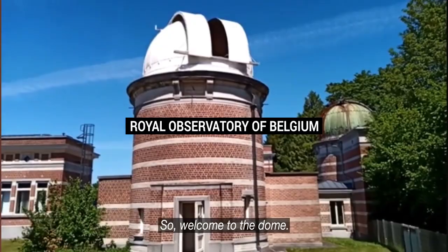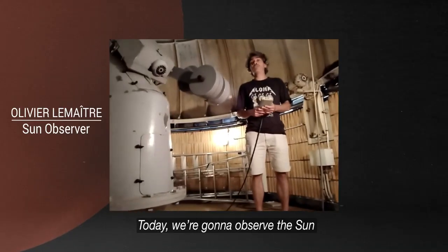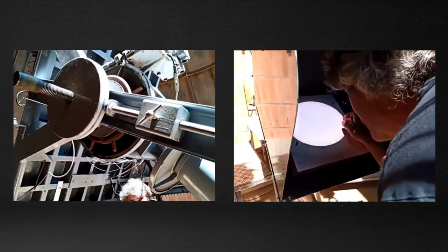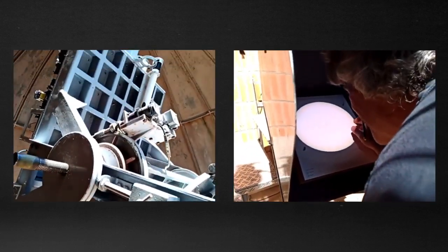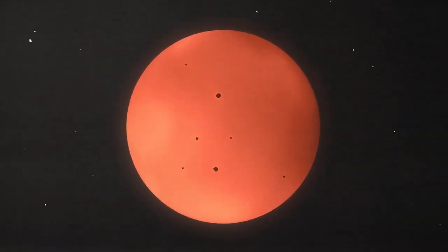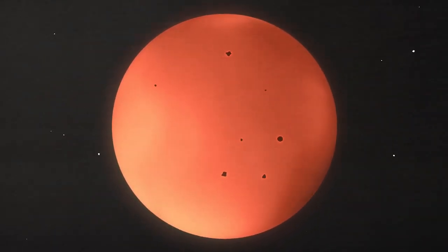So welcome to the dome. Today we're going to observe the sun and see if it has some sunspots. Every morning when the skies are clear, Olivier looks through this telescope in search of sunspots. These are dark blotches on the sun that are the main source of solar eruptions. They appear and disappear on the sun's surface.